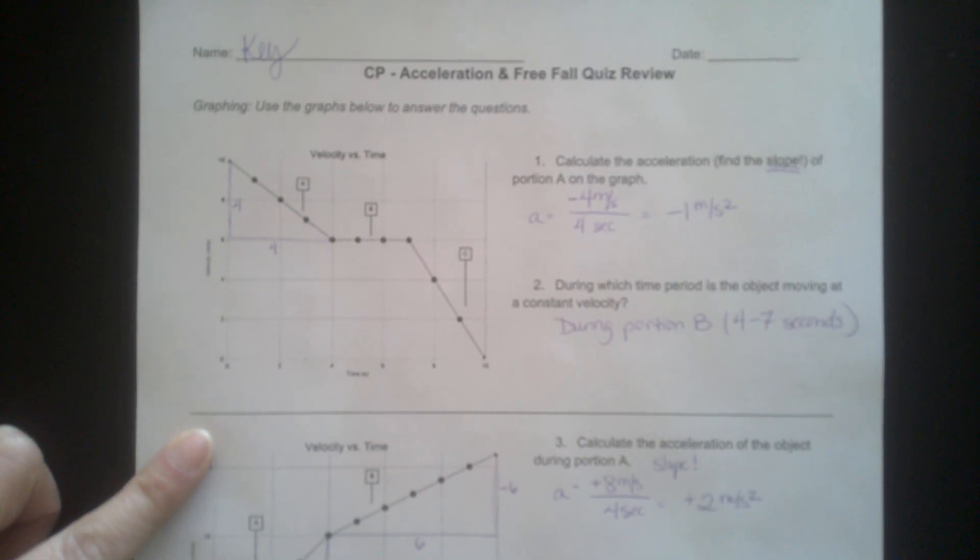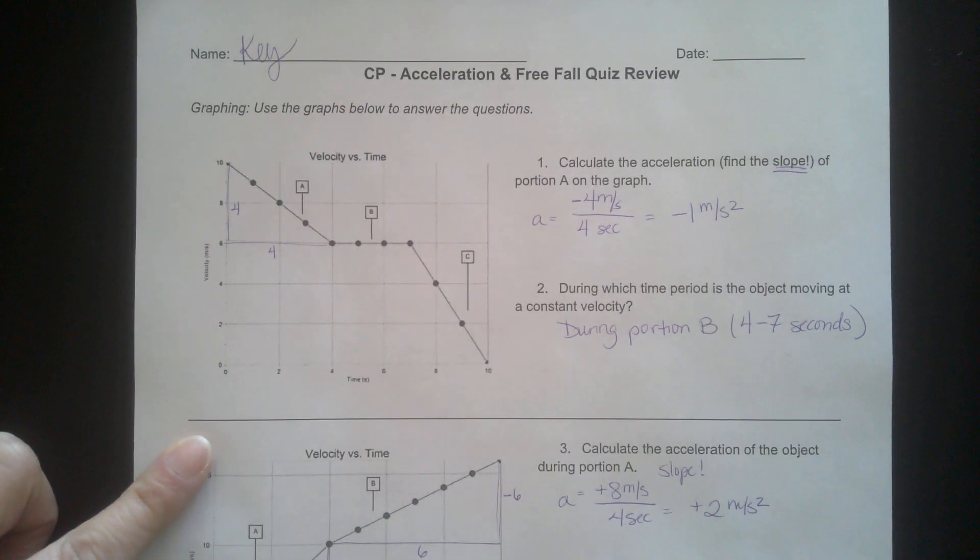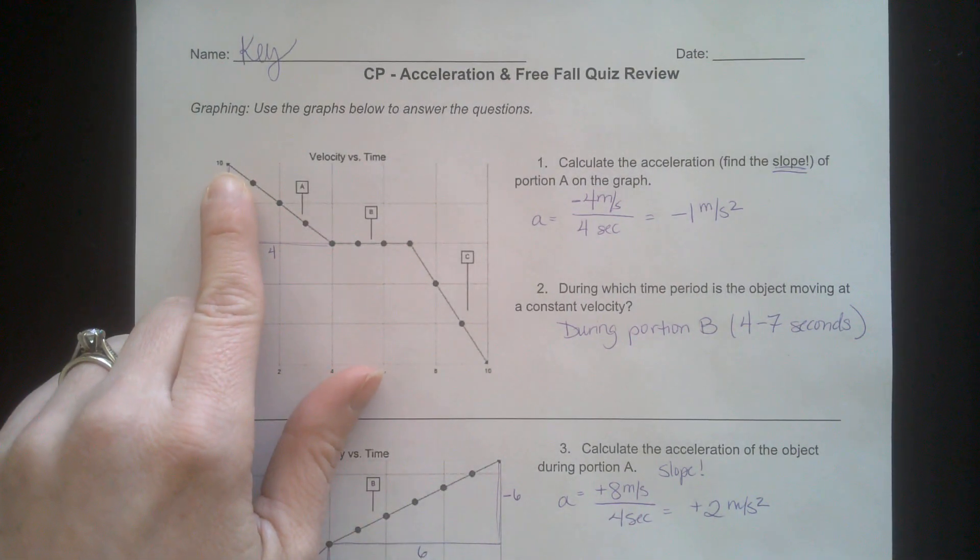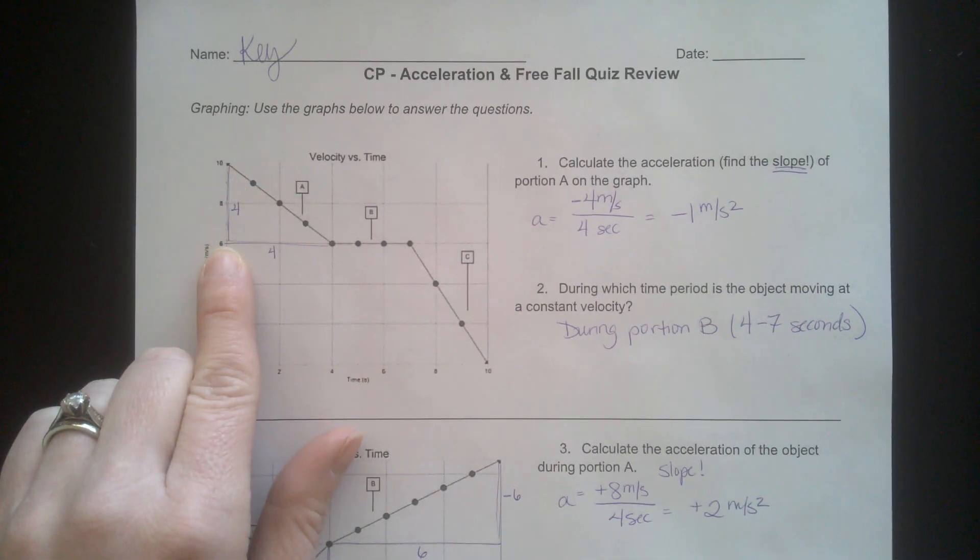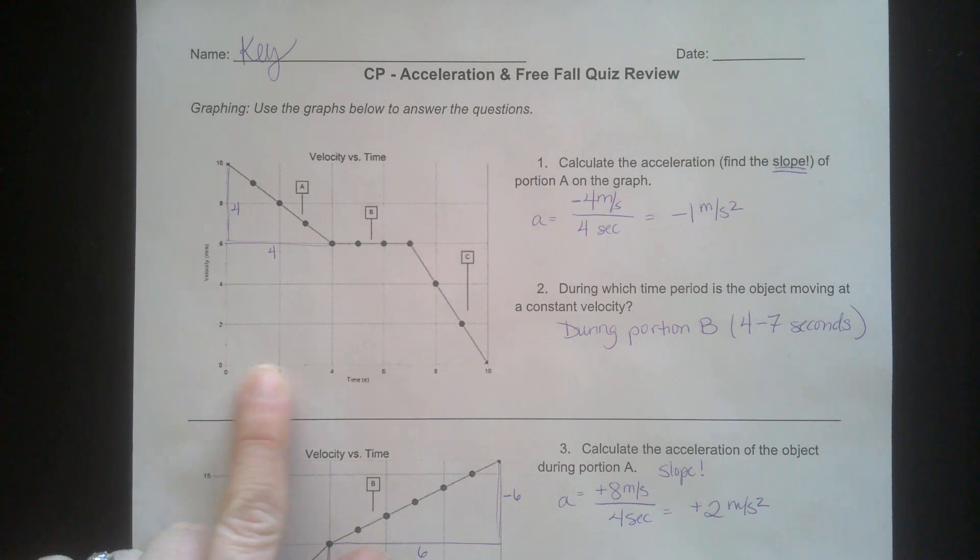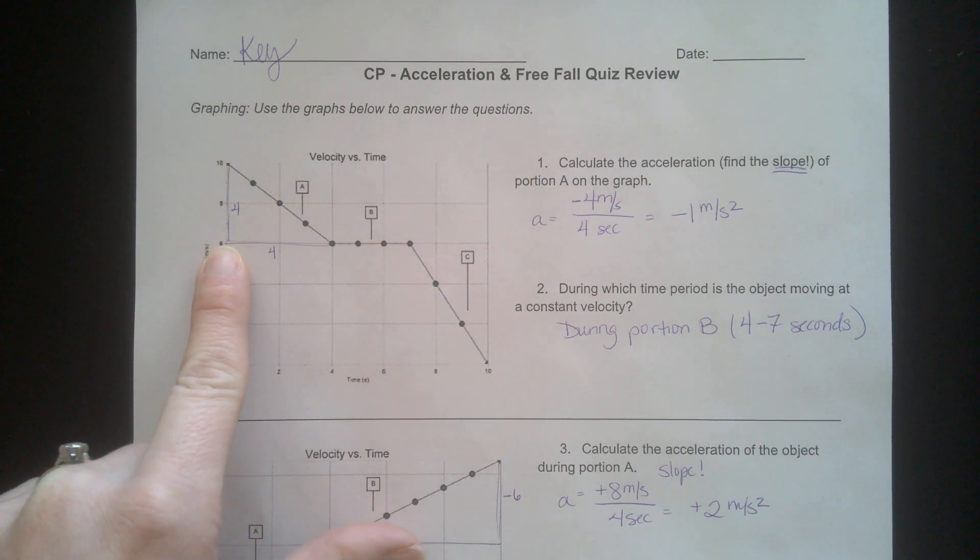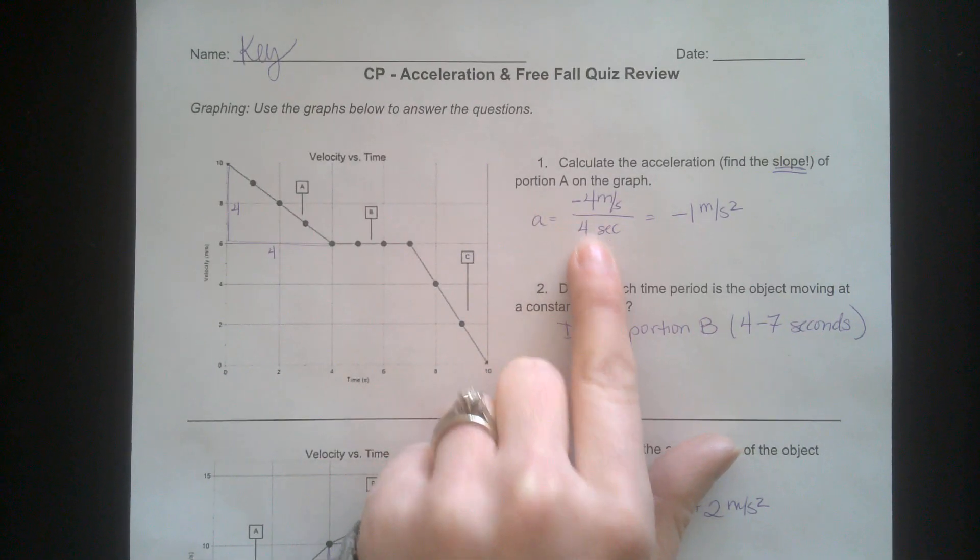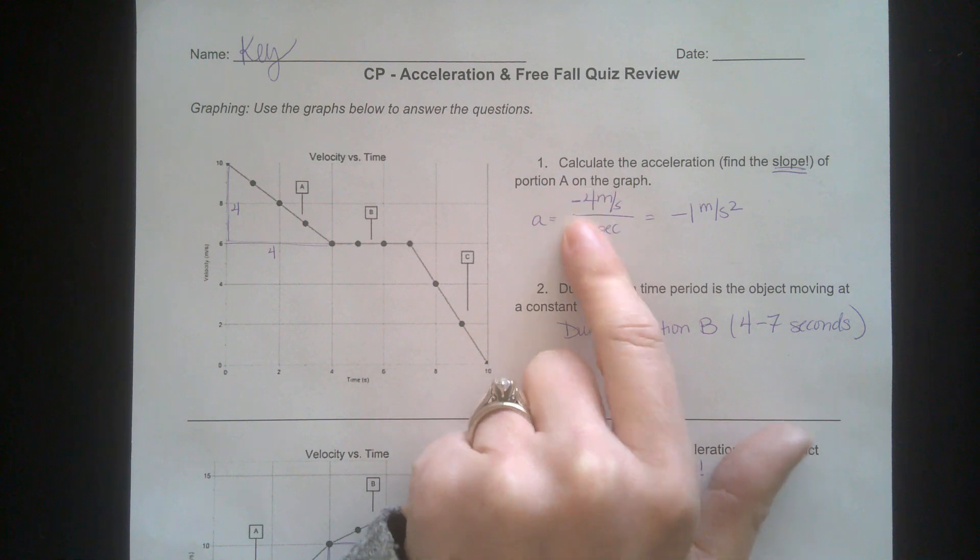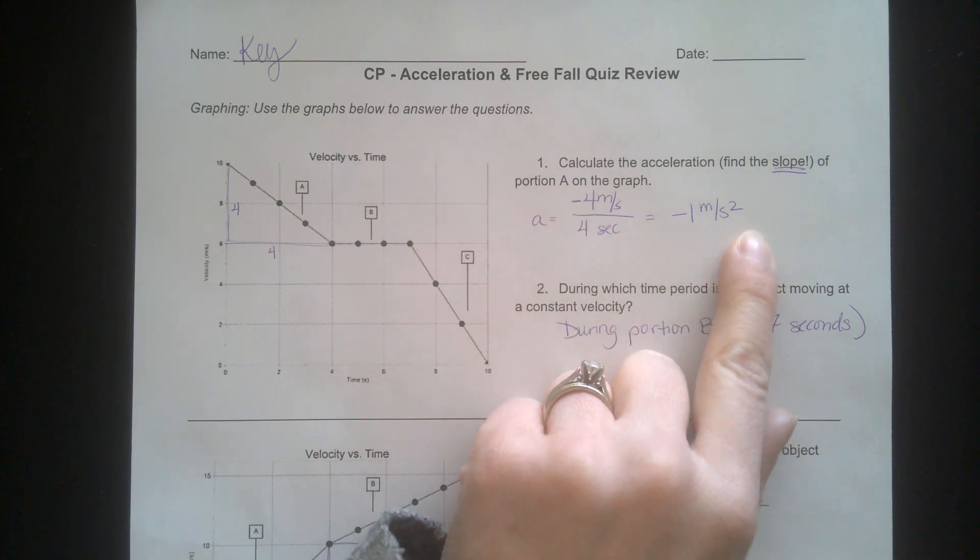At the first point, it starts at 10 and drops to 6. That's a change of 4. On the X axis, it's 4 seconds. So change in Y is 4, change in X is 4. It's a negative slope, so your answer comes out to 4 over 4, which is negative 1 meters per second squared.